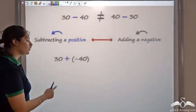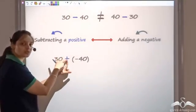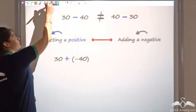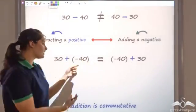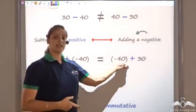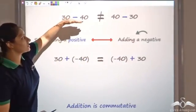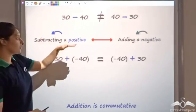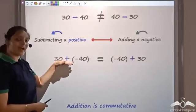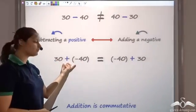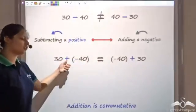Now, since addition is commutative, about this addition symbol I can exchange these two positions. So 30 plus negative 40 is the same as negative 40 plus 30. Subtraction itself is not commutative, but if you convert subtraction to adding a negative, you can then apply commutativity — because addition is commutative, you can reverse the order.